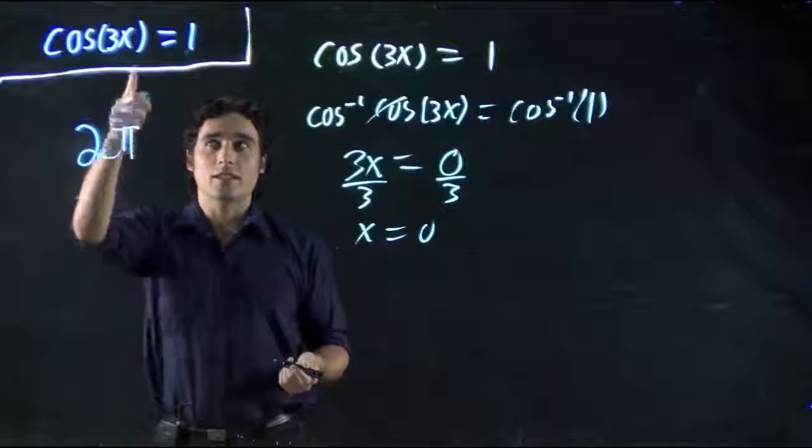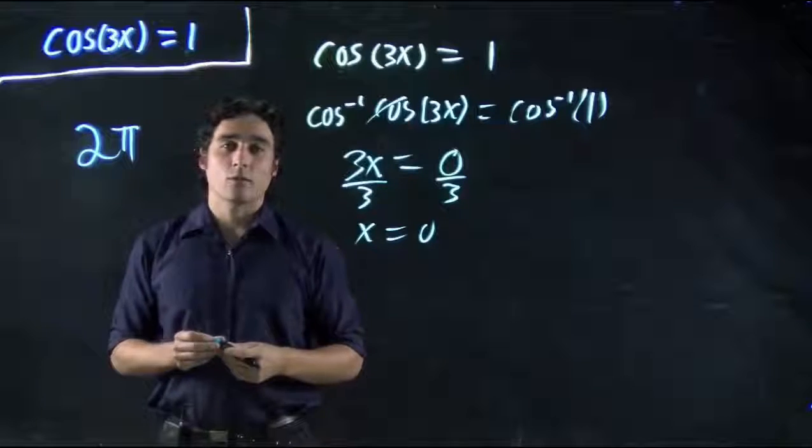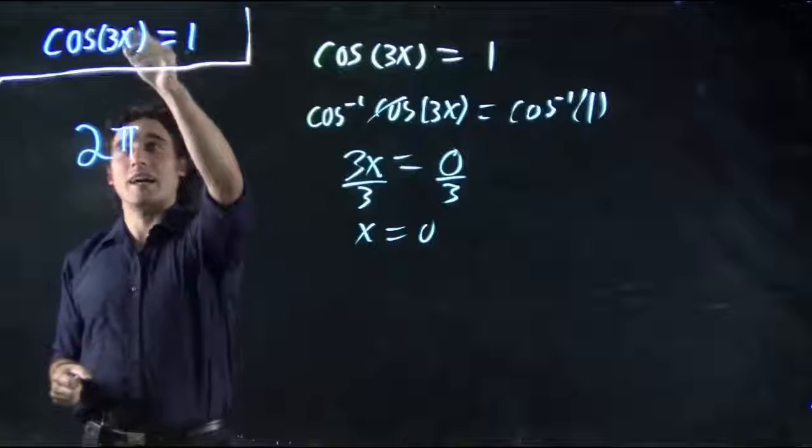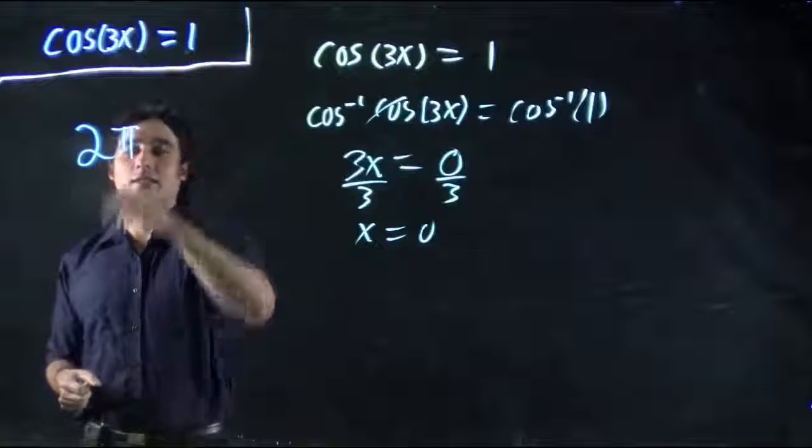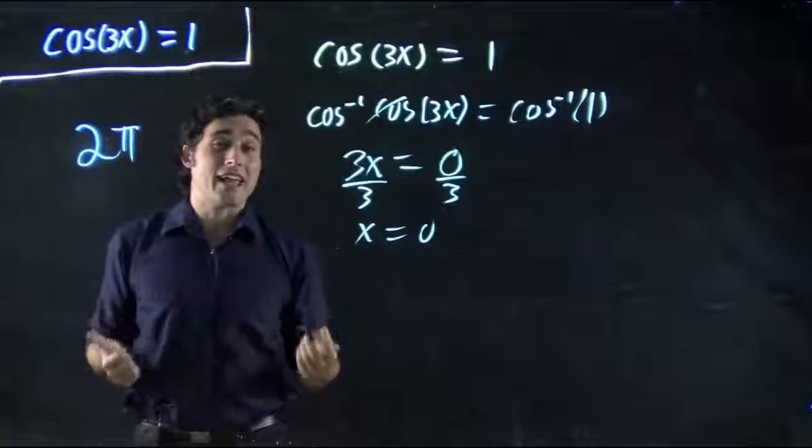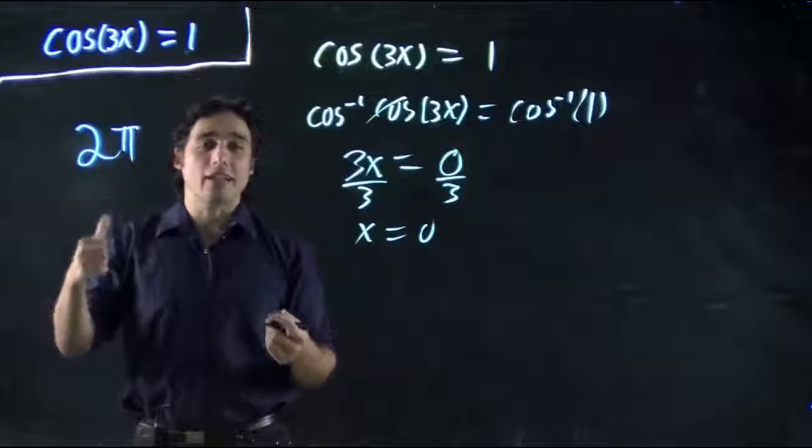Well, with this 3, it influences it. What our period is, is 2π divided by this number right here. They often represent it with a k. So it's 2π over k is the period.